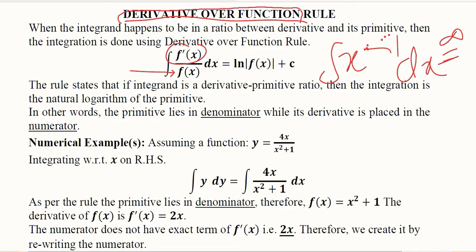This is what it says - derivative over function rule. It is very simple: if the integrand is actually a derivative to primitive ratio, then the integration of that will simply be the natural log of the primitive.